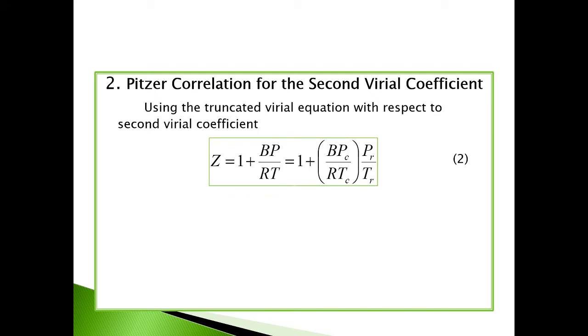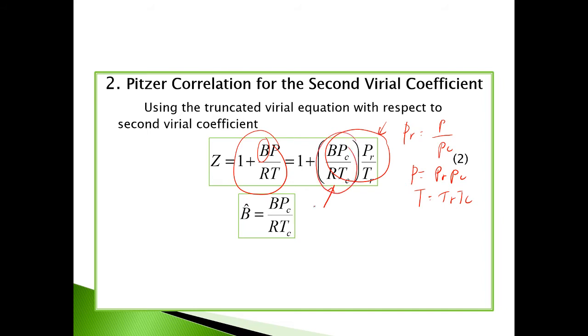Next is the Pitzer correlation for the second virial coefficient. Remember, this is our truncated virial equation with respect to the second virial coefficient. Expressing it in terms of the critical pressure and temperature, we replace P with PR times PC and T with TR times TC. These terms are combined and named B hat.